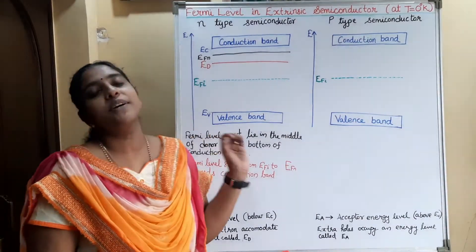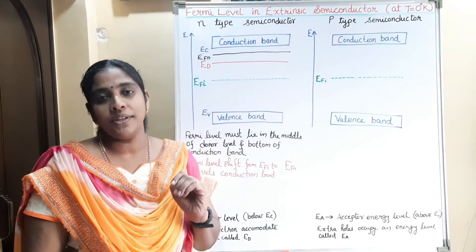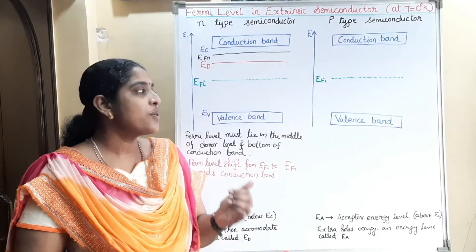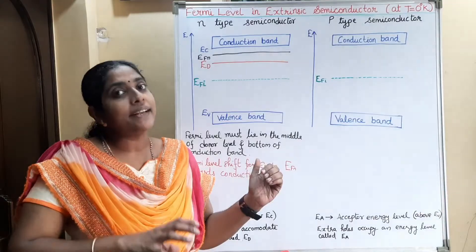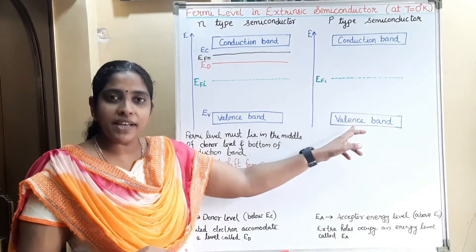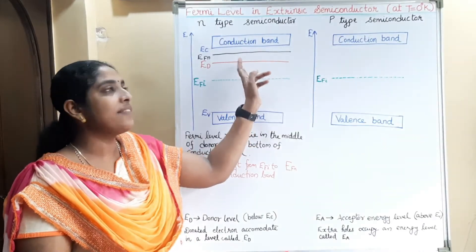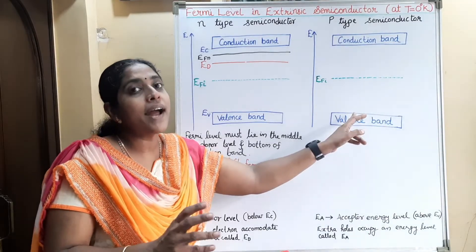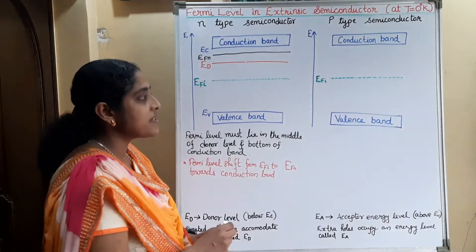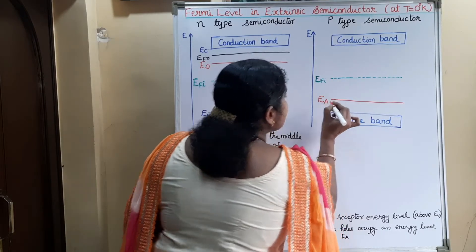Now we can see where will be the position of Fermi level in p-type semiconductor. The p-type semiconductor is formed by the addition of trivalent impurities. These trivalent impurities are called acceptor atoms because they accept electrons from the crystal, thereby creating holes in the crystal. Since the acceptor atoms are creating holes, these extra holes will occupy an energy level near to the valence band — because the valence band is filled with holes and the conduction band is filled with electrons. So we can draw the acceptor energy level near to and above the valence band.